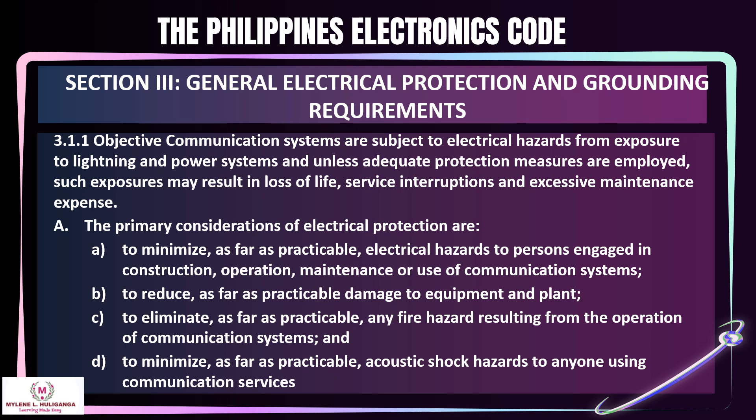Section 3.1.1 — Objective: Communication systems are subject to electrical hazards from exposure such as lightning and power systems, and unless adequate protection measures are employed, such exposures may result in loss of life, service interruptions, and excessive maintenance expense. The primary considerations of electrical protection are: (a) to minimize as far as practicable electrical hazards to persons engaged in construction, operation, maintenance, or use of communication systems; (b) to reduce as far as practicable damage to equipment and plant; (c) to eliminate as far as practicable any fire hazard resulting from the operation of communication systems; and (d) to minimize as far as practicable acoustic shock hazards to anyone using communication services.